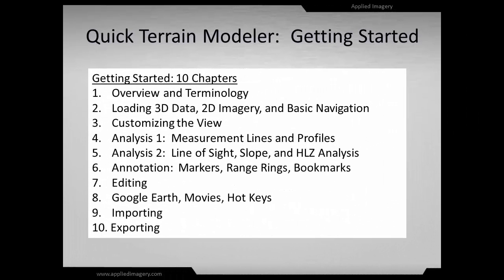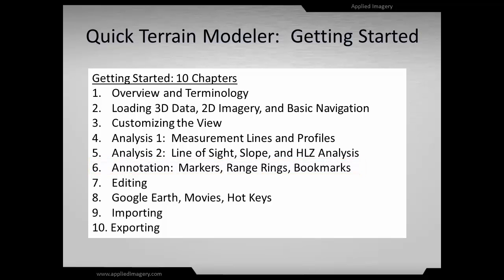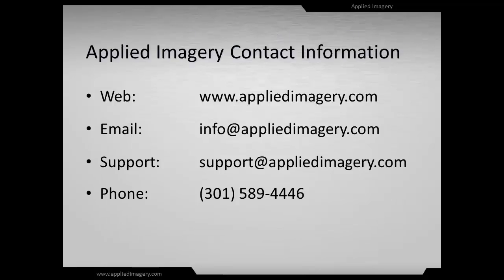That concludes Chapter 6 of the Quick Terrain Modeler Getting Started series. At this point, you should be comfortable with creating and editing markers, range rings, and bookmarks. Our next chapter will cover basic editing tasks. Please review the rest of the series on our website and contact us if you need any help. We'd love to hear from you.